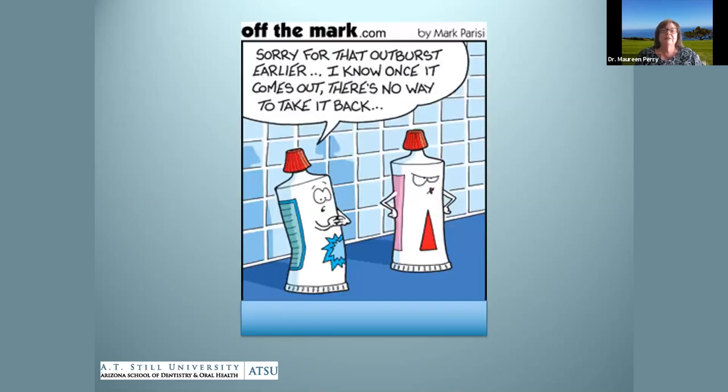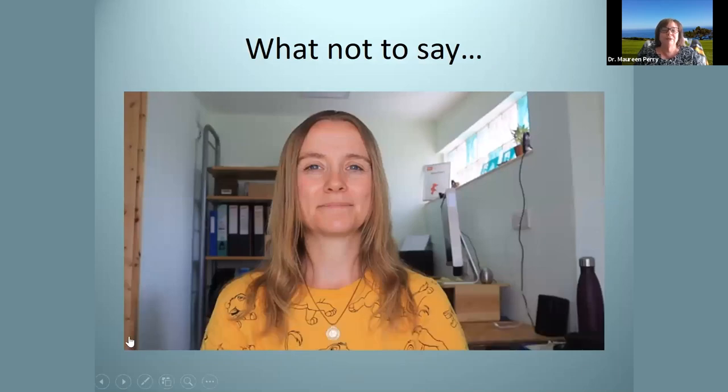Now let's talk about what not to say to a person with autism. The presenter in this video says: 'Everyone's a little bit autistic, right? Everyone's on the spectrum somewhere.' No. Autistic traits are human traits — therefore everyone has some of these traits. But it's a particular collection of traits that leads to the diagnosis of autism. If you don't have this particular collection, you don't have autism.